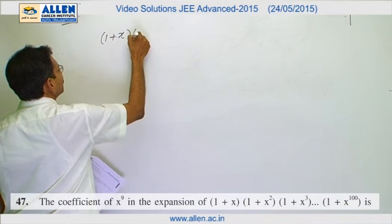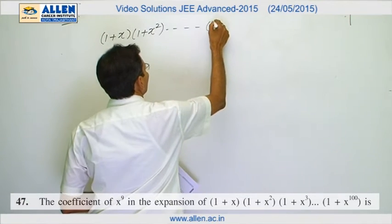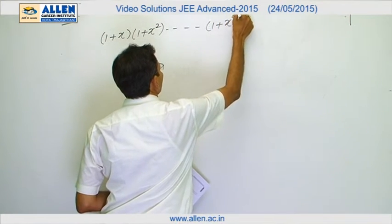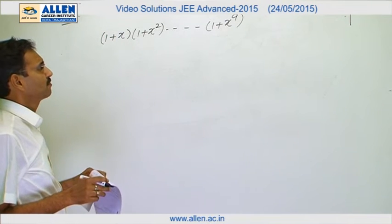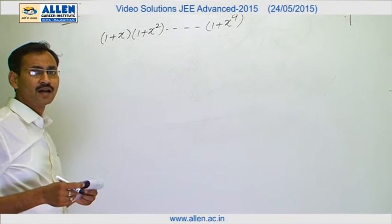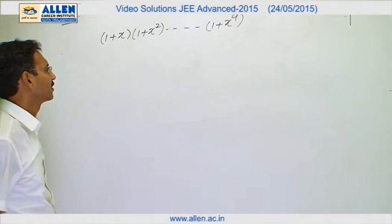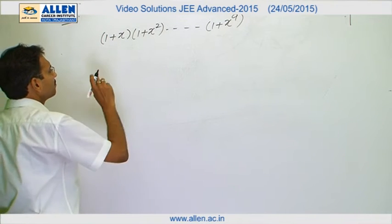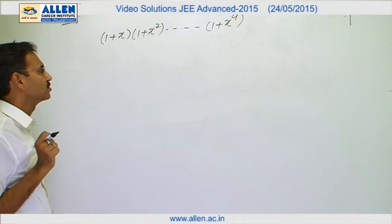We have to find the coefficient of x raise to the power 9. Only the factors up to 1 plus x power 9 will contribute because in rest of the factors the powers of x are higher. So we will consider only these 9 factors. In these 9 factors how we are going to obtain x power 9, we have to concentrate on it.